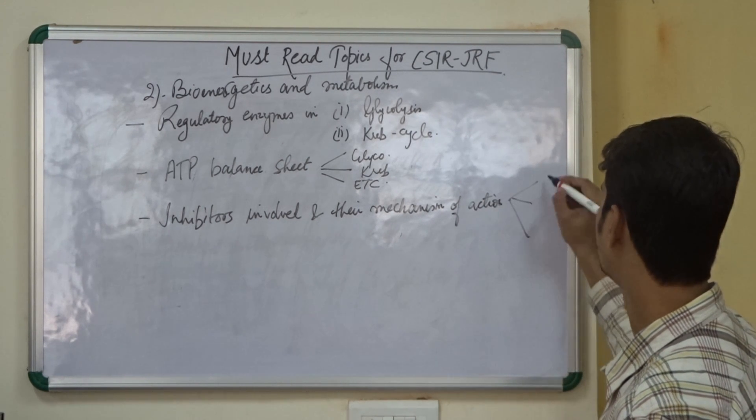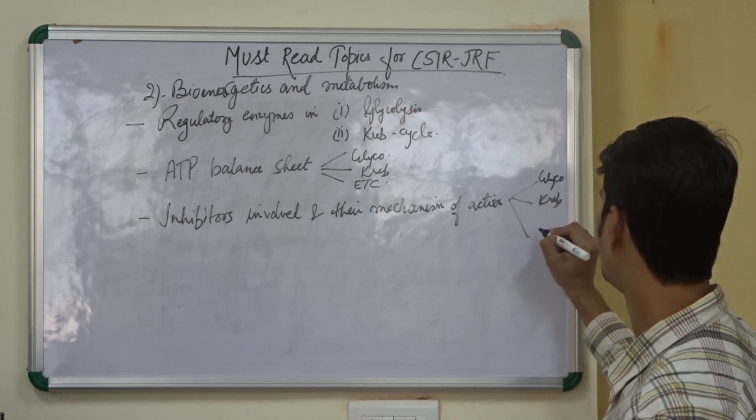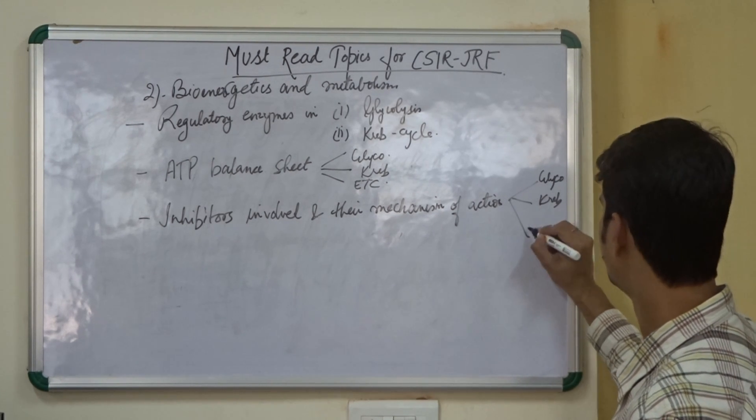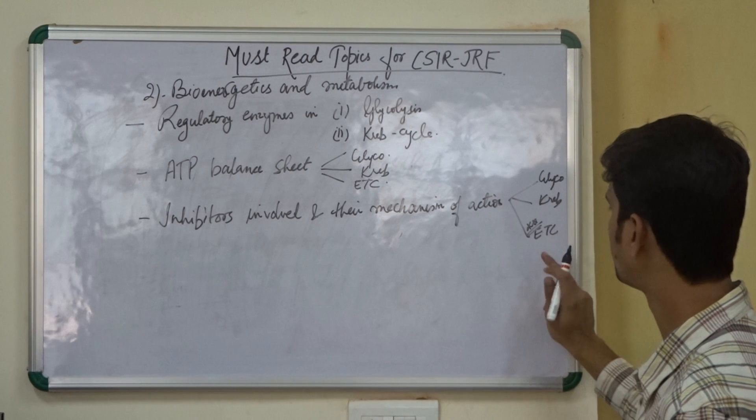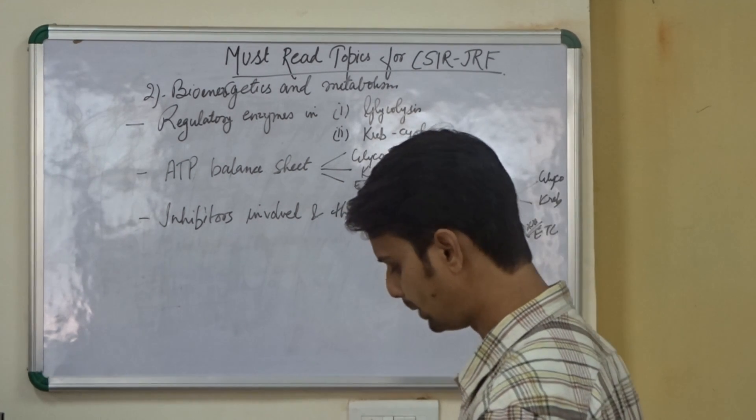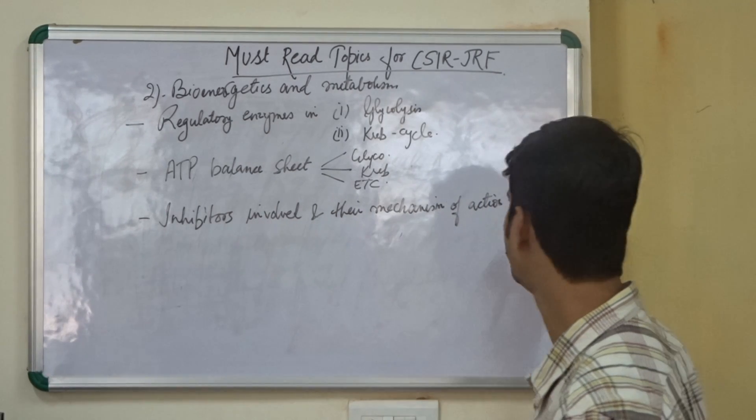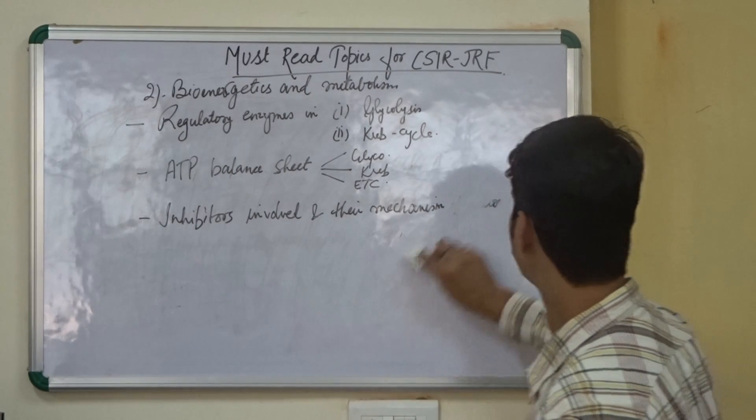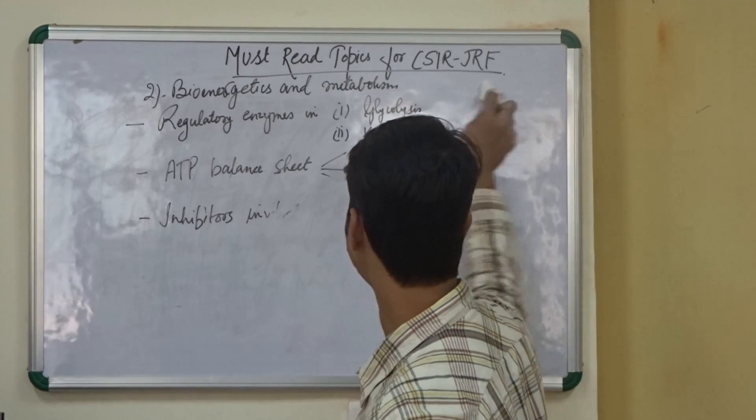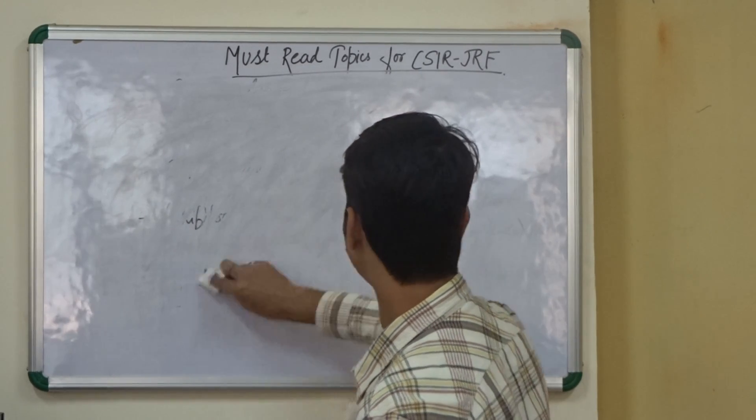Then we also need to know about the inhibitors involved and how they work and their mechanism of action. We need to know about the ATP balance sheet in all the three, that is glycolysis, Krebs and ETC. Basically, we need to concentrate on the ETC in this part. This completes our second unit. We are very specific here. Don't go very deep. Time is very less.